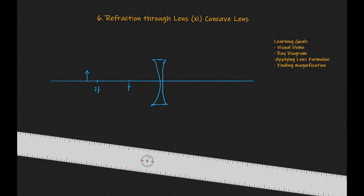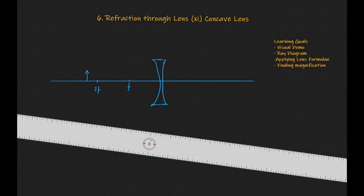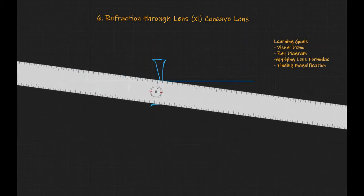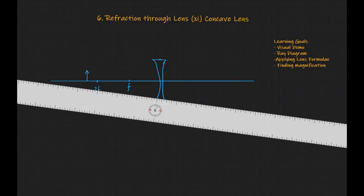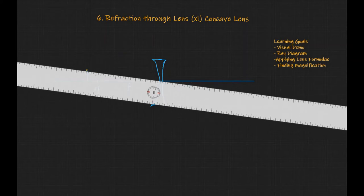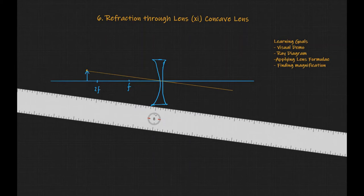So let's draw the ray diagram for this scenario that we just now saw. So here is an indicative object beyond 2F. So first we have let this be an indicative point on the object. A ray from here going through the center of curvature would pass undeviated and let's draw that ray. So here is that ray. So let's mark the arrows for this.